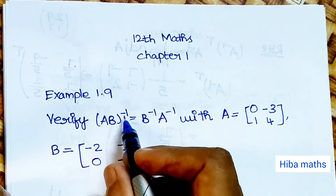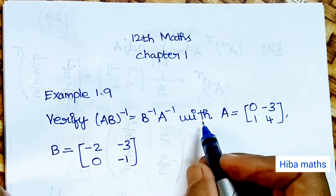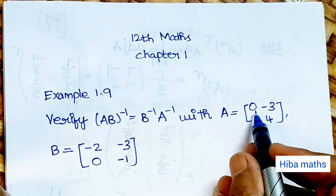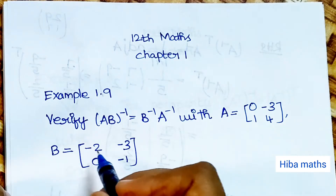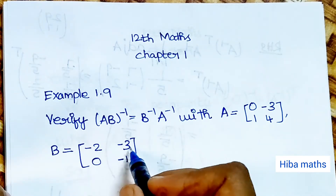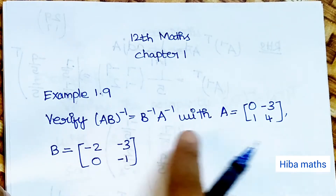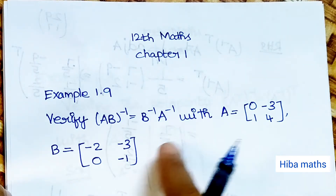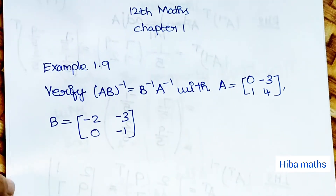Verify that AB inverse is equal to B inverse into A inverse, where A is equal to [0, −3; 1, 4] and B is equal to [−2, −3; 0, −1]. We have to verify this for 2×2 matrices, so the calculations are easy and we will solve it.